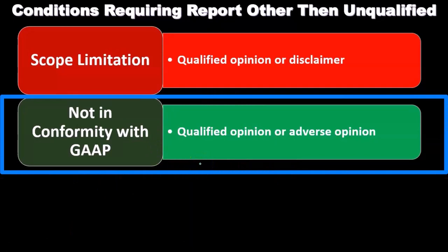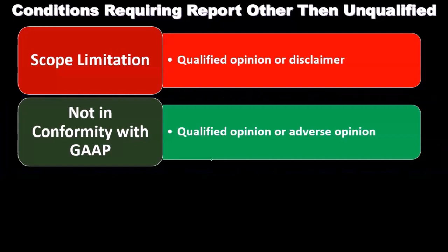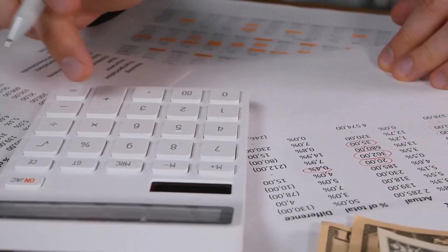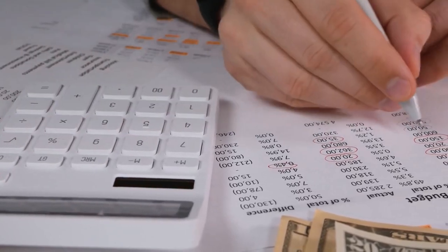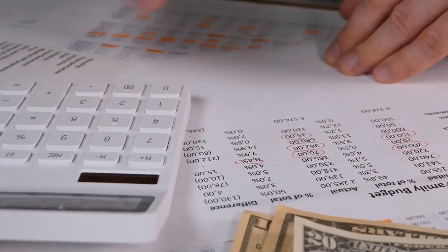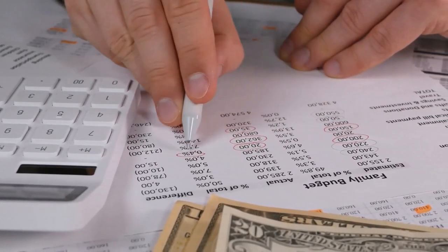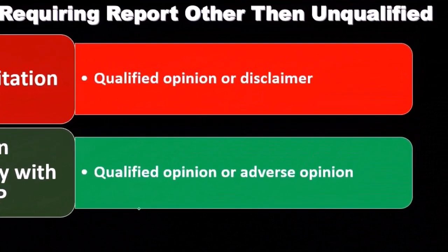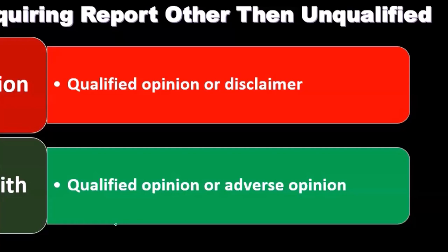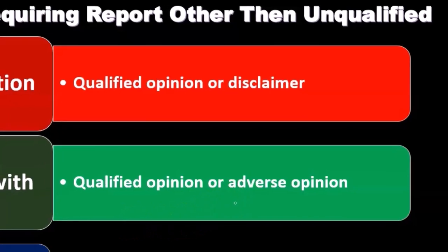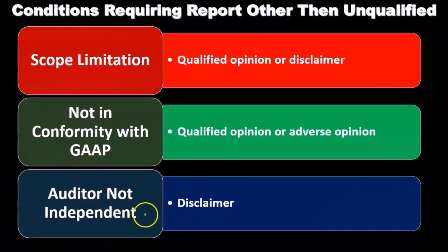Not in conformity with generally accepted accounting principles would result in a qualified opinion or an adverse opinion, depending on the degree. If one thing wasn't in conformity, we might say this component is a deviation from GAAP and the rest of the financial statements are in conformity. But if there's a pervasive, significant deviation throughout the financial statements, we can't give an opinion that they're in accordance with GAAP, and therefore we'd have to issue an adverse opinion — basically the worst type of opinion.